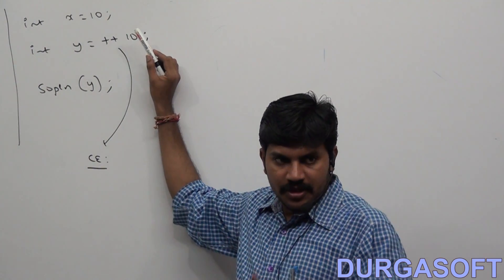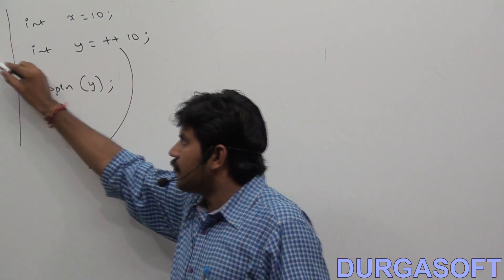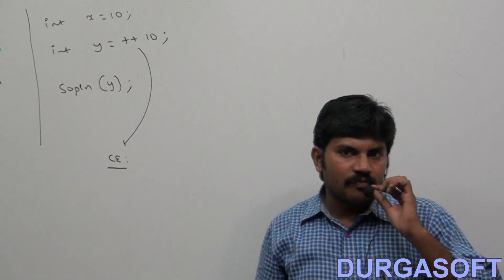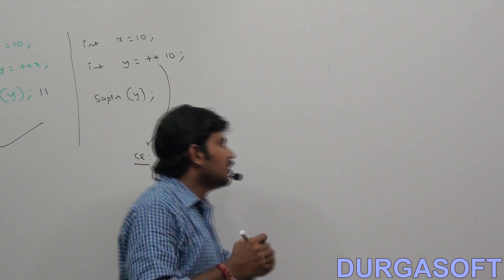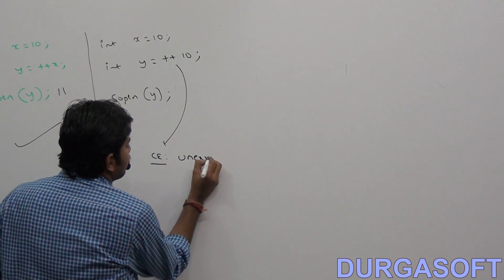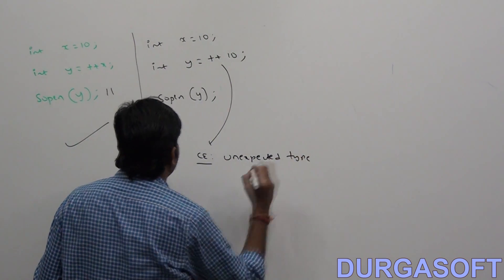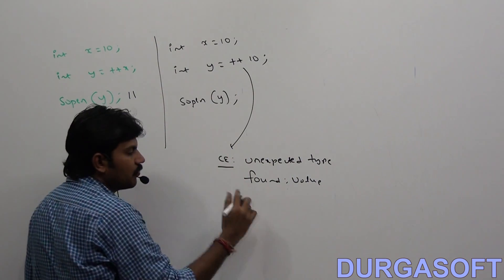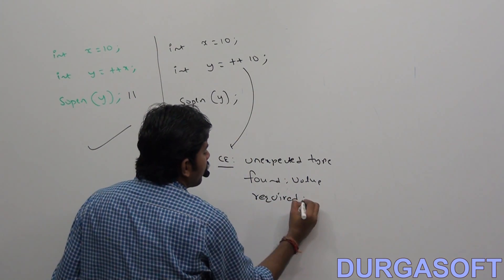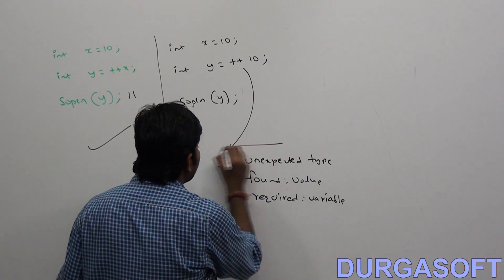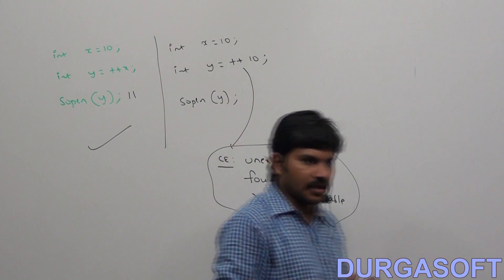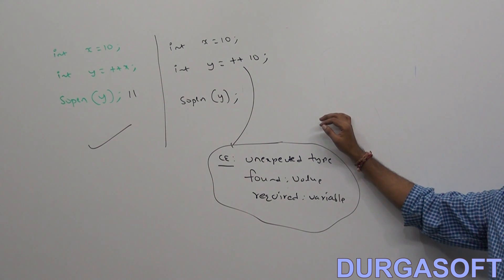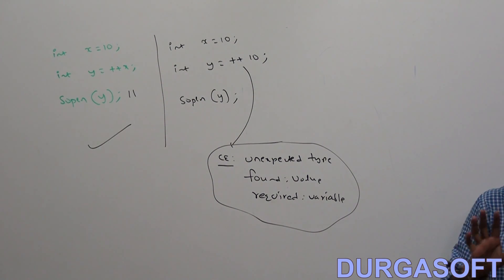Increment and decrement operators are applicable only for variables, not for constant values. If by mistake you apply them to a constant value, you immediately get a compile error. The error says: 'unexpected type — found value, required variable.' So we can apply increment and decrement operators only for variables, but not for constant values. This is the first loophole.